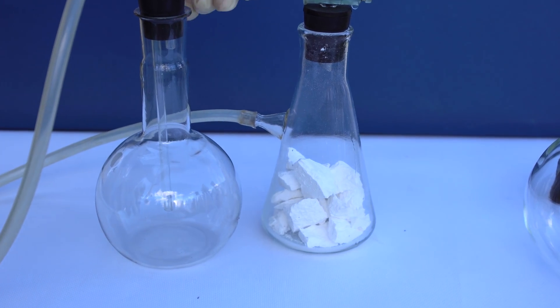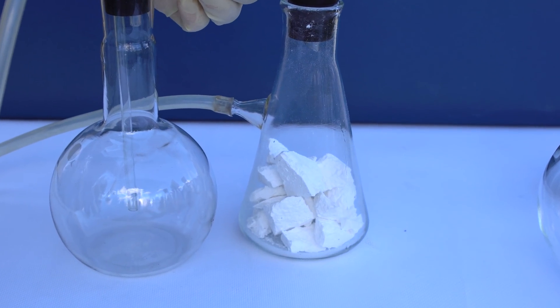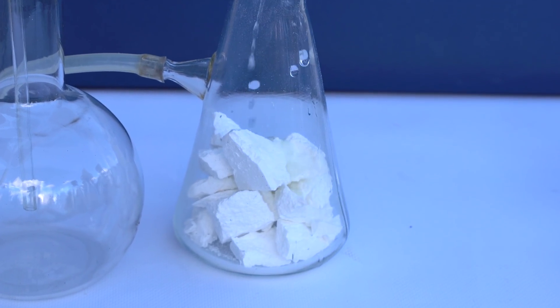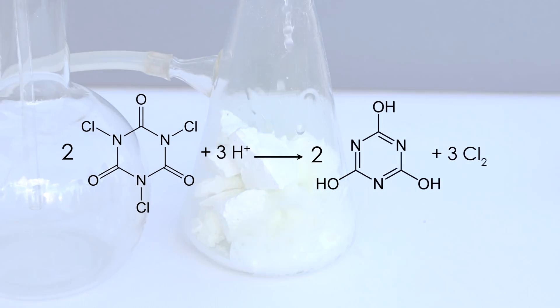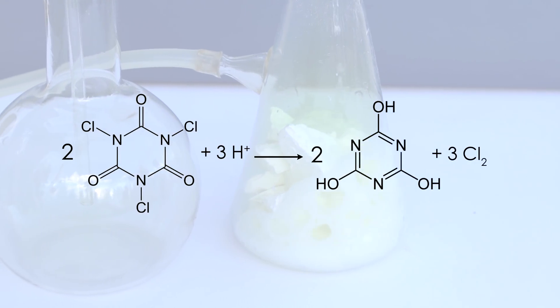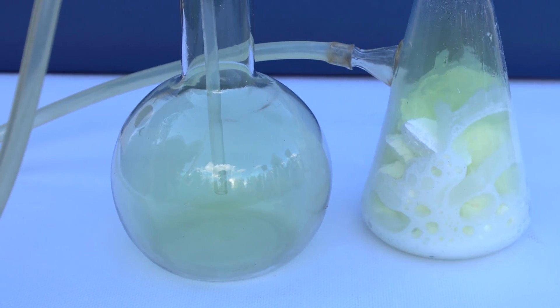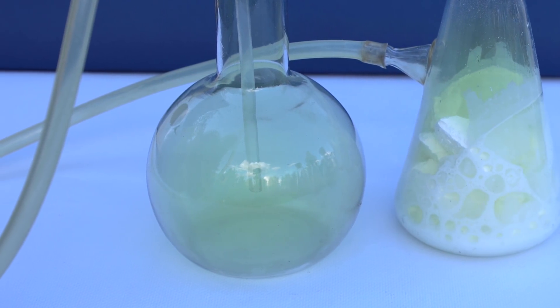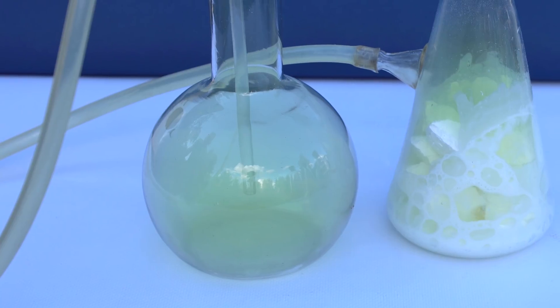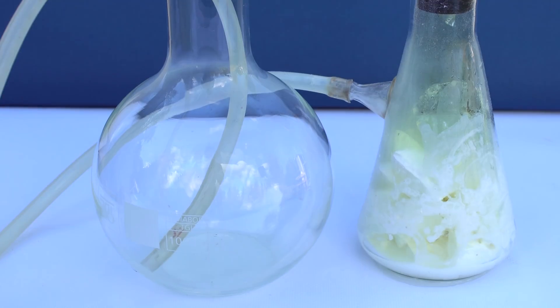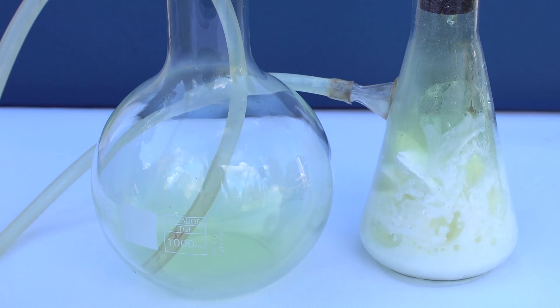To produce chlorine, I chopped the tablet of trichlorocyanuric acid, after which I started slowly adding hydrochloric acid to it. In an acidic environment, this acid decomposes with the release of a large amount of chlorine, which has a yellow-green color. I am storing the released gas in a flask, as chlorine is almost three times heavier than air, from where it can be easily collected from the bottom of the flask.